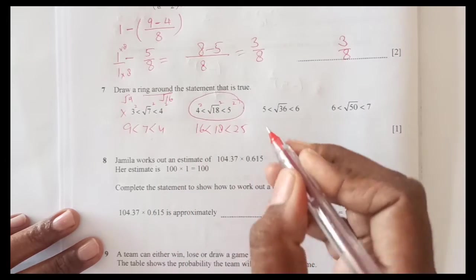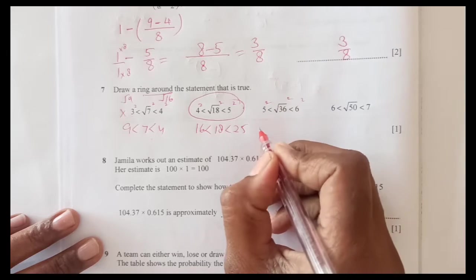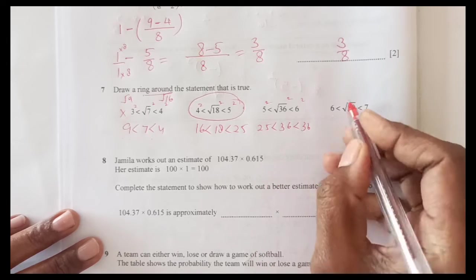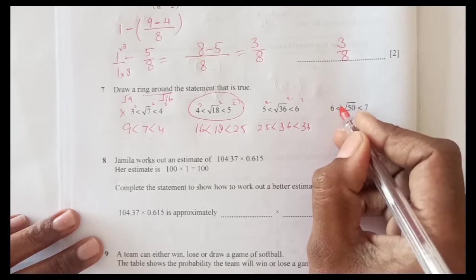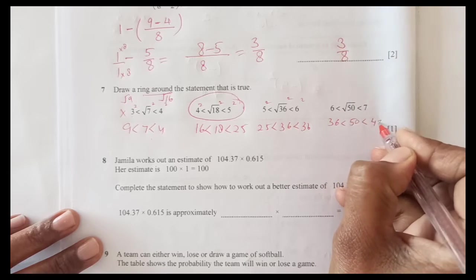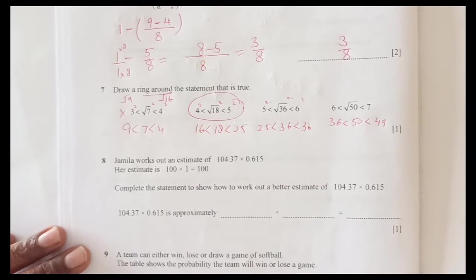Again we will make square root of these. This is 16 is less than 18 is less than 25, so this is true. We will put here the ring. Now this one, let us make the square. This is 25 is less than 36 is less than 36 which is not true. This one is 36 less than 50 less than 49. 50 is not less than 49, so only answer is this one here.